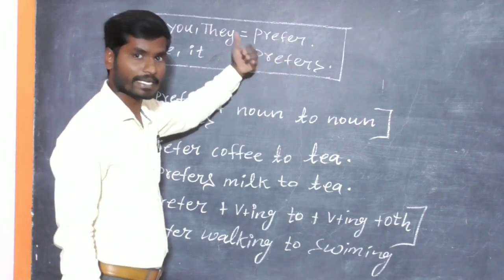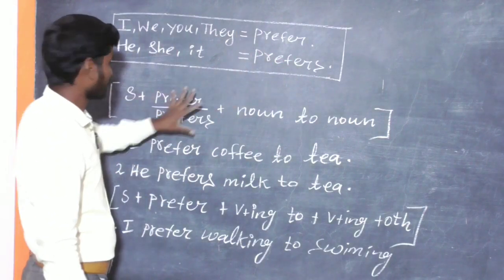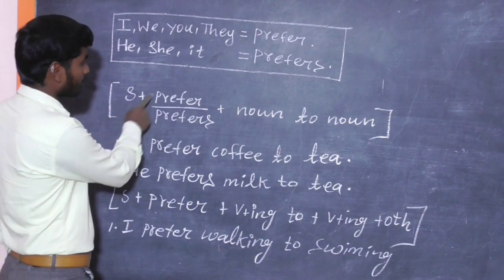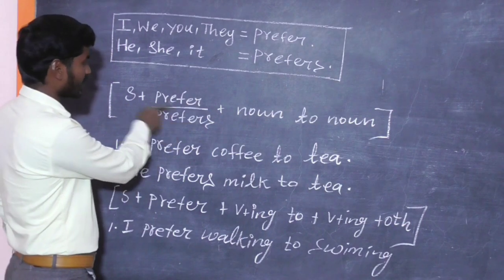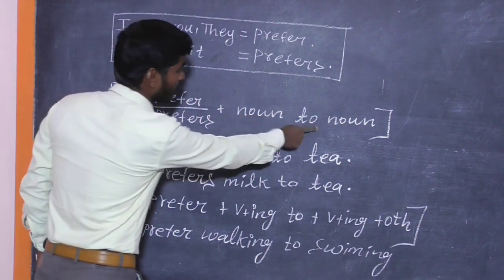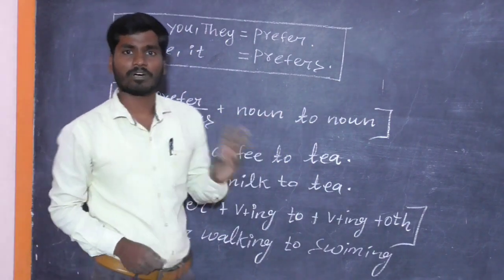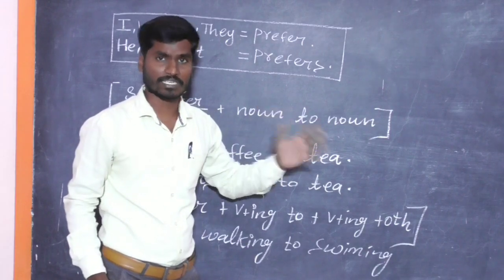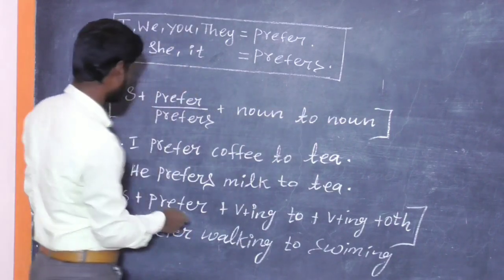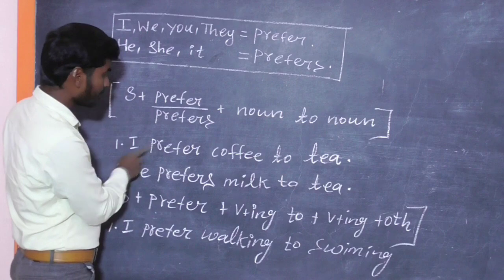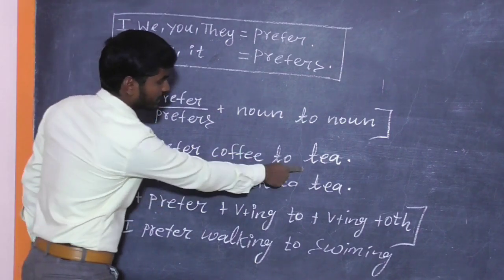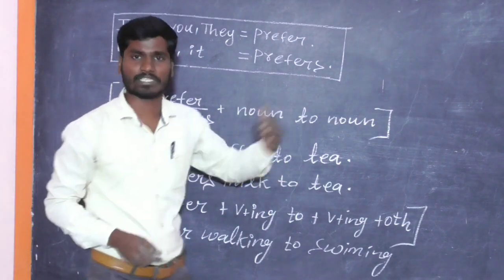Now look at this structure: first you need to write SUBJECT, plus PREFER or PREFERS according to the rule. Plus Noun to Noun. What is a noun? Name of a person, name of a place, or name of a thing. For example: I prefer coffee to tea.